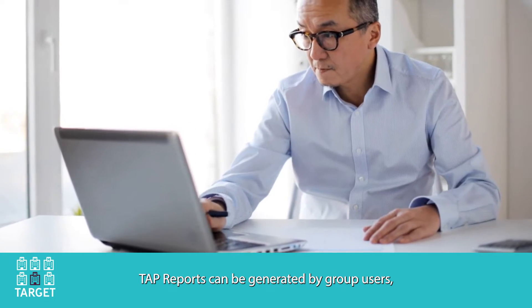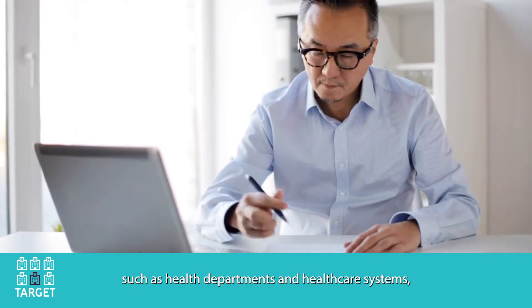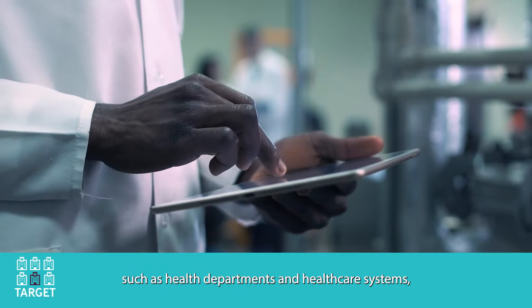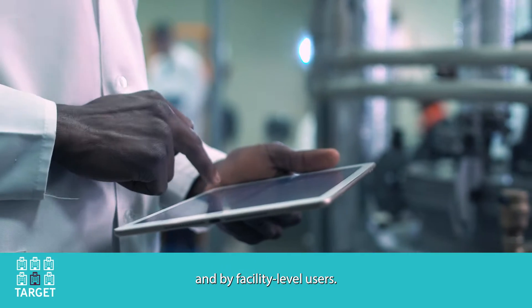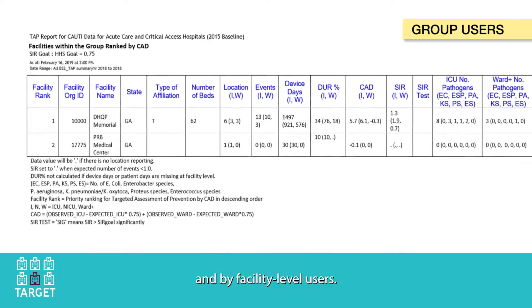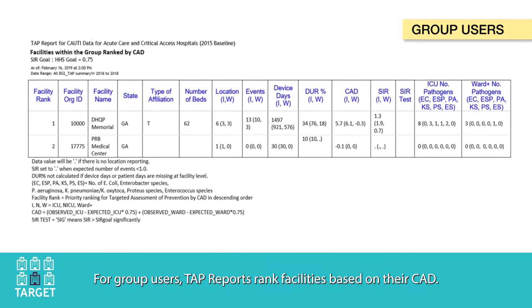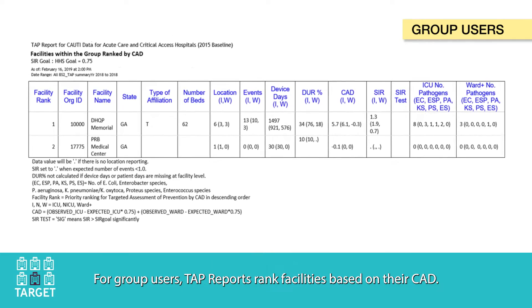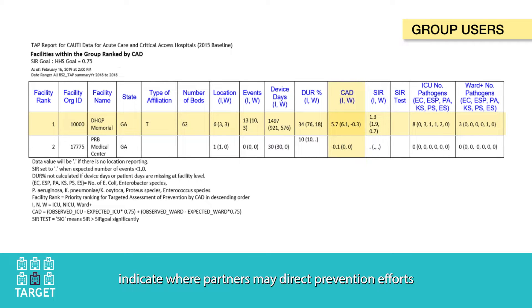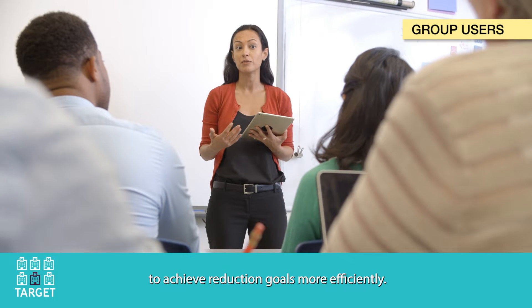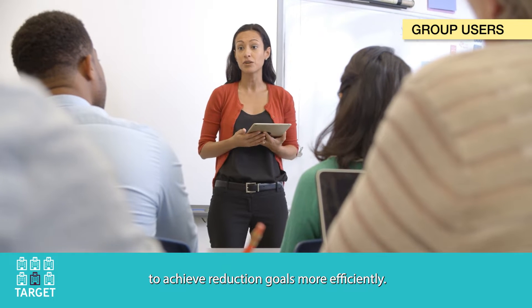TAP reports can be generated by group users, such as health departments and healthcare systems, and by facility-level users. For group users, TAP reports rank facilities based on their CAD. Facilities with higher CADs, and therefore a higher burden of excess infections, indicate where partners may direct prevention efforts to achieve reduction goals more efficiently.